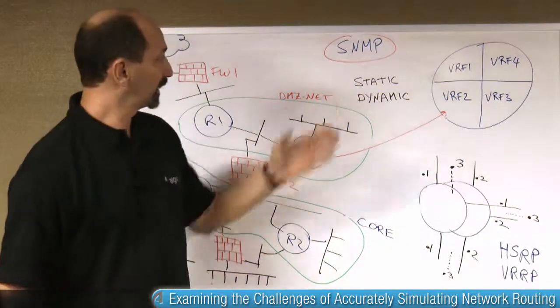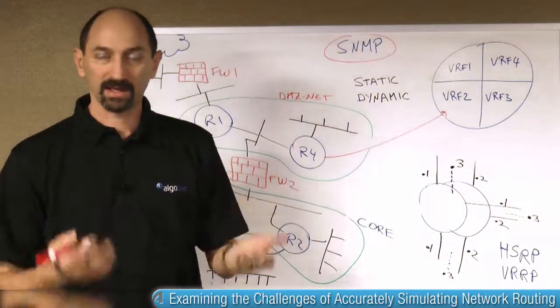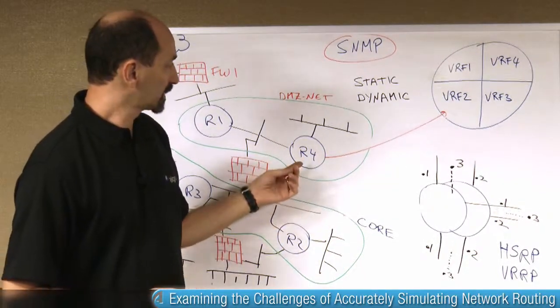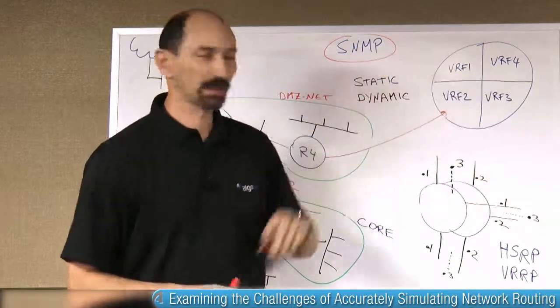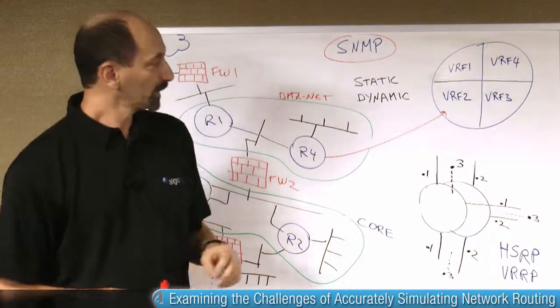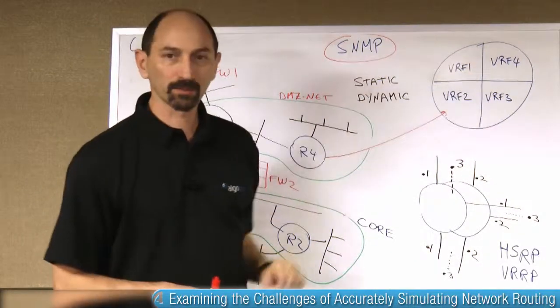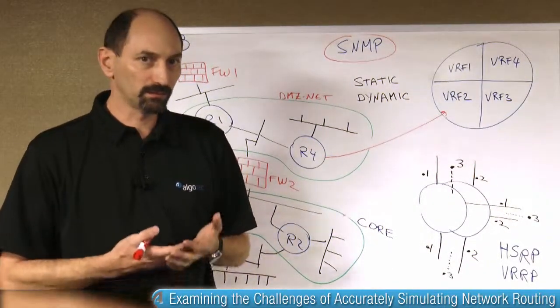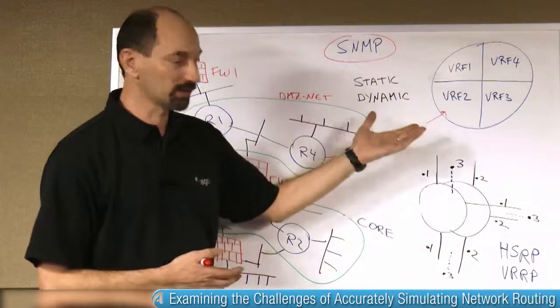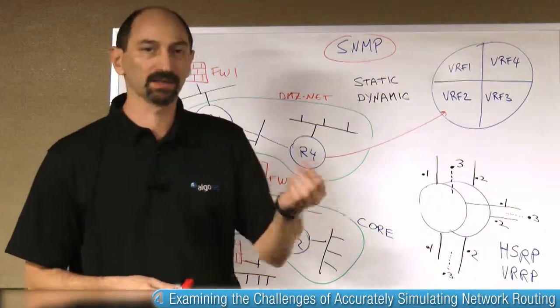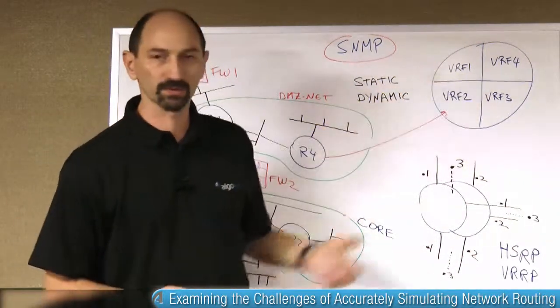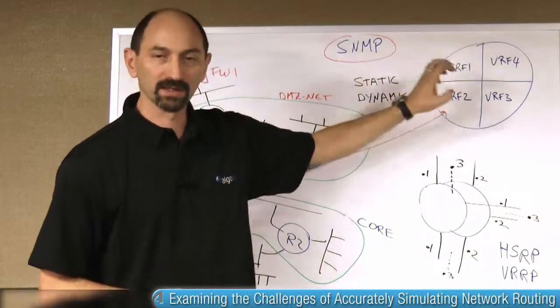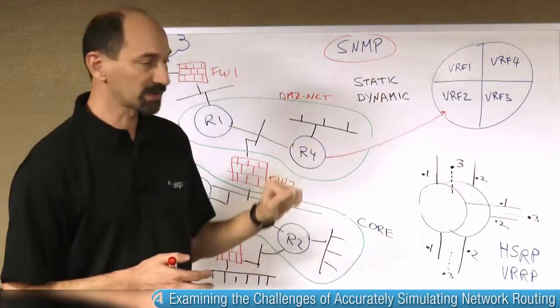So if you connect to the physical router using SNMP and extract the routing table, what will you get? Well, what usually happens is that you're going to get a mixture of the routing tables of all these VRFs. You wouldn't get each of them separately. And if you get a mixture of all the routes, you really are not accurately representing the routing decision because, in fact, for any given packet, only one of the VRFs will make a routing decision. And you need to identify which one it is and get that routing table separate from the rest.